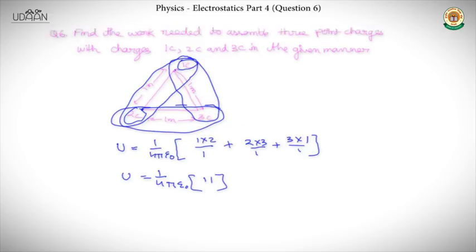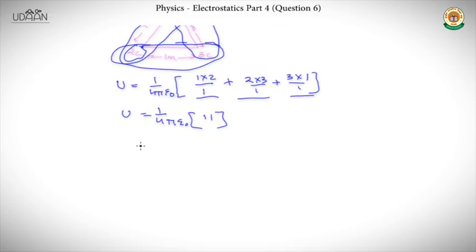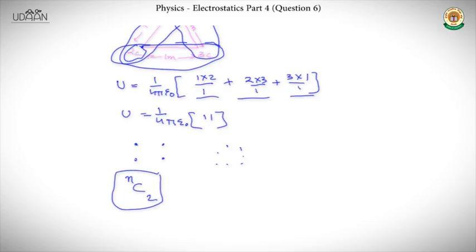We made three pairs for three charges. If there are 4 charges, number of pairs is 4C2; if 5 charges, it's 5C2. You select 2 particles at a time from n particles. The work needed to assemble the charges equals the total electrostatic potential energy of the system — that relation is very important.